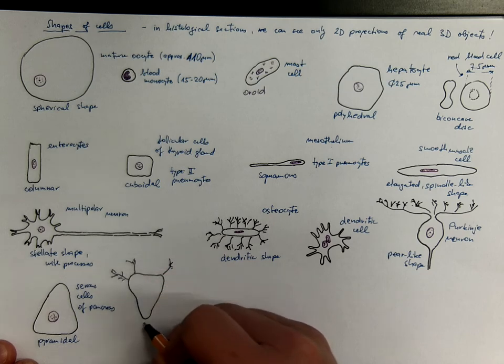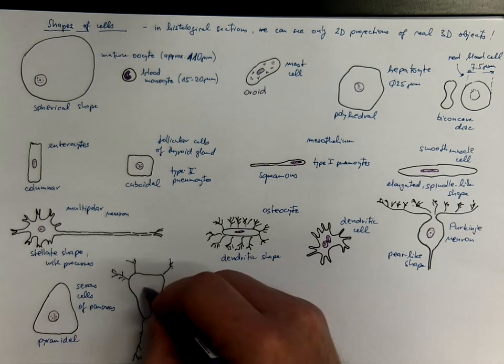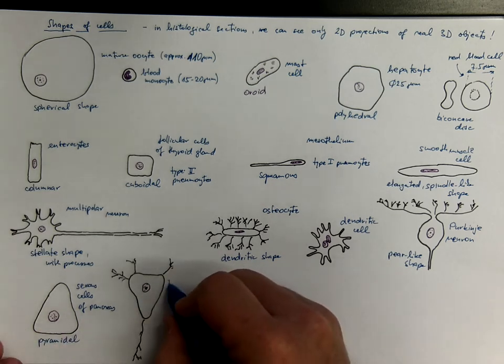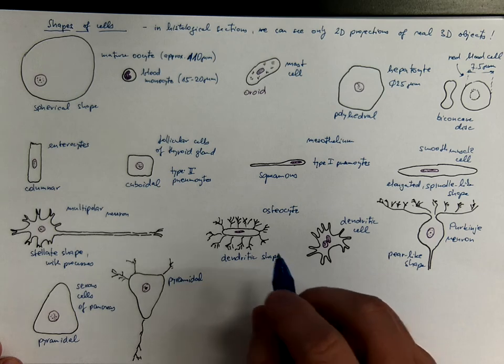With their branching processes and cell body. They are even called pyramidal neurons. They occur in the brain cortex.